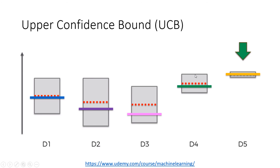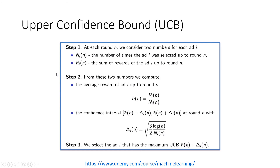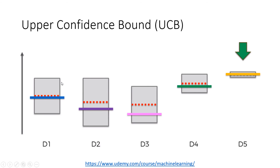This algorithm eventually exploits more the best machine and tries to do that in the least amount of time possible. That's a good algorithm. We are going to actually implement it, and we'll see what's happening once you see the code in Python and in R. So that's it for the upper confidence bound algorithm, a reinforcement learning algorithm. We are going to code this now in Python. Okay, bye-bye.